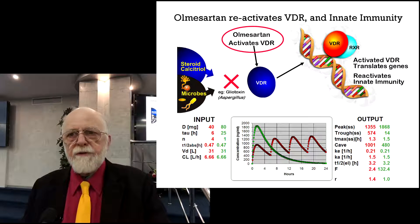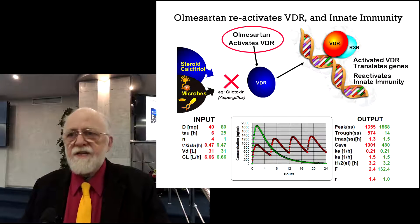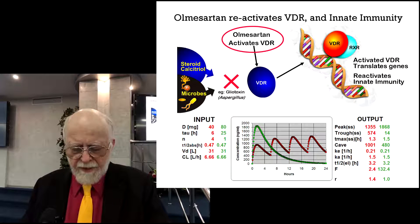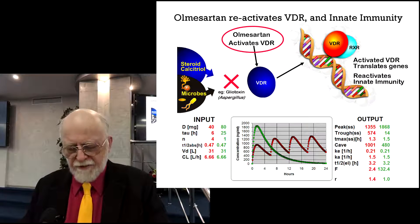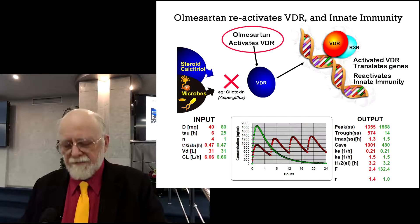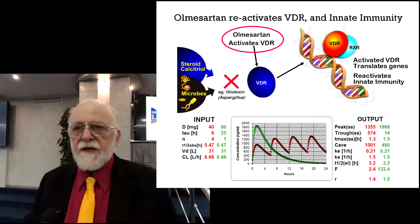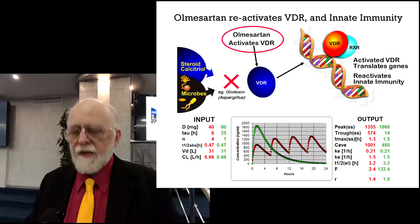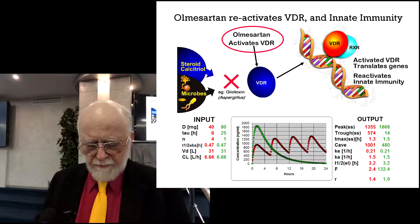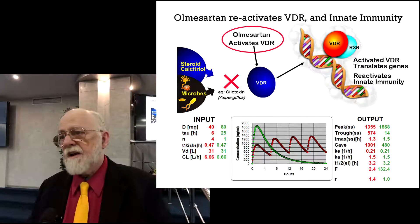It's a drug that was already approved. Olmesartan is now generic, approved as an angiotensin 2 receptor blocker. The graph at the bottom shows the normal dosing in green — one pulse per day — whereas when we give four- or six-hourly pulsing, you get a gradual build-up of concentration in the plasma, shown by the red graph. That enables the VDR to recommence transcription of those antimicrobials and gradually work on the microbes. It usually takes as much as 18 months before a patient knows they're going to be fine.